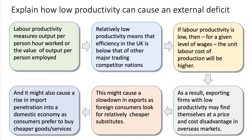The third chain of reasoning in this video: let's think about supply-side economics. Explain how low productivity can cause an external deficit. Again, define those terms. If there's a key term in a question, define it. Labour productivity is output per person hour worked, or the value of output per person employed.